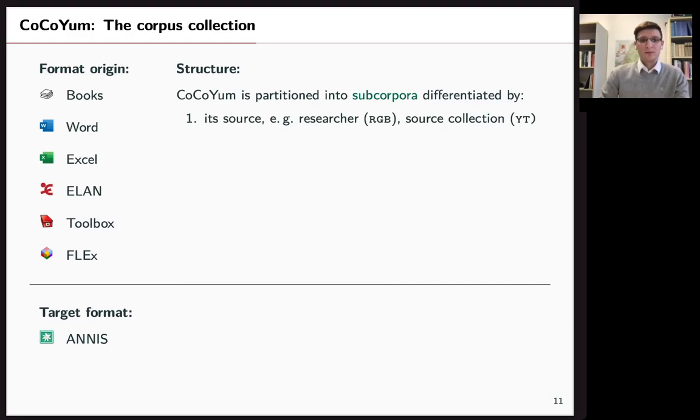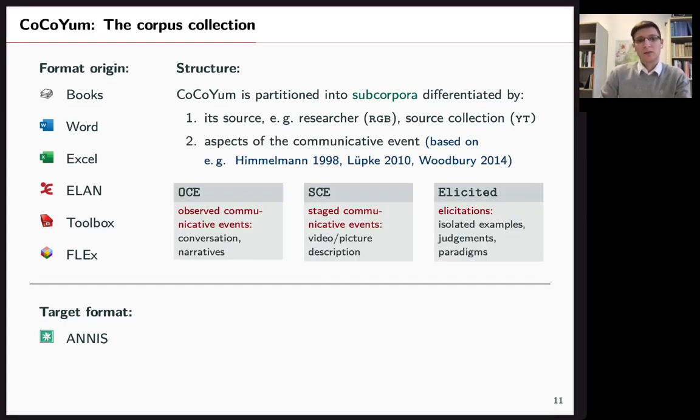The structure of CoCoYum looks as follows. We partitioned each data set, so many different texts into subcorpora and we will differentiate those subcorpora by first the source, so the researcher or the collection where it comes from and secondly an aspect of the communicative event. Himmelmann proposed that distinguishing observed communicative events and staged communicative events for instance is quite useful and also separating elicitations if you include those, which we say you should. And this gives us a benefit of easily seeing what type of data is included in a subcorpus. But of course we have to make sure that you can search across all of these communicative events or only choose a subset of those.